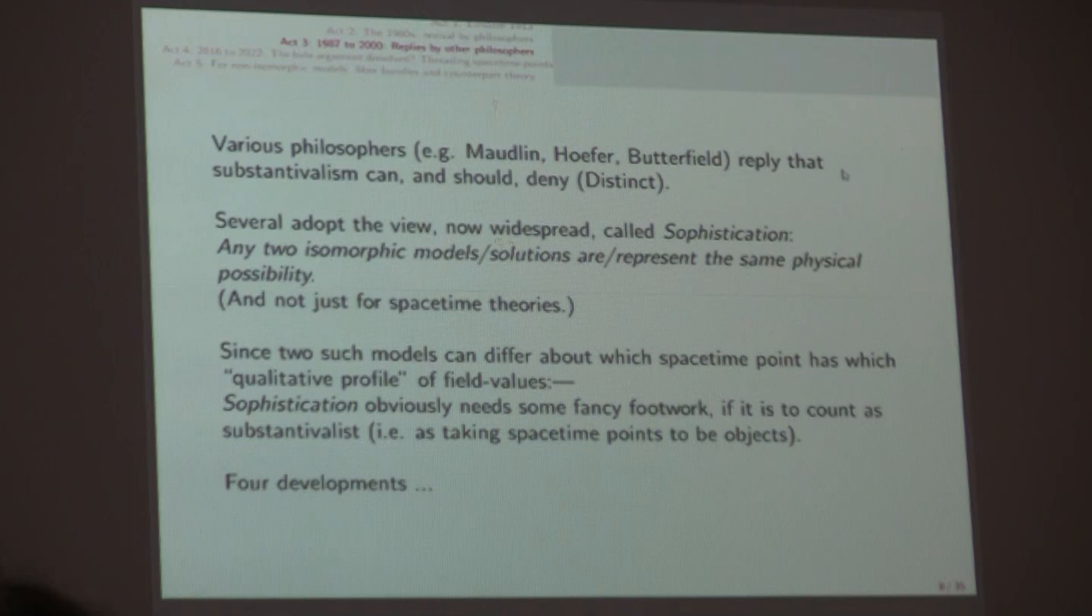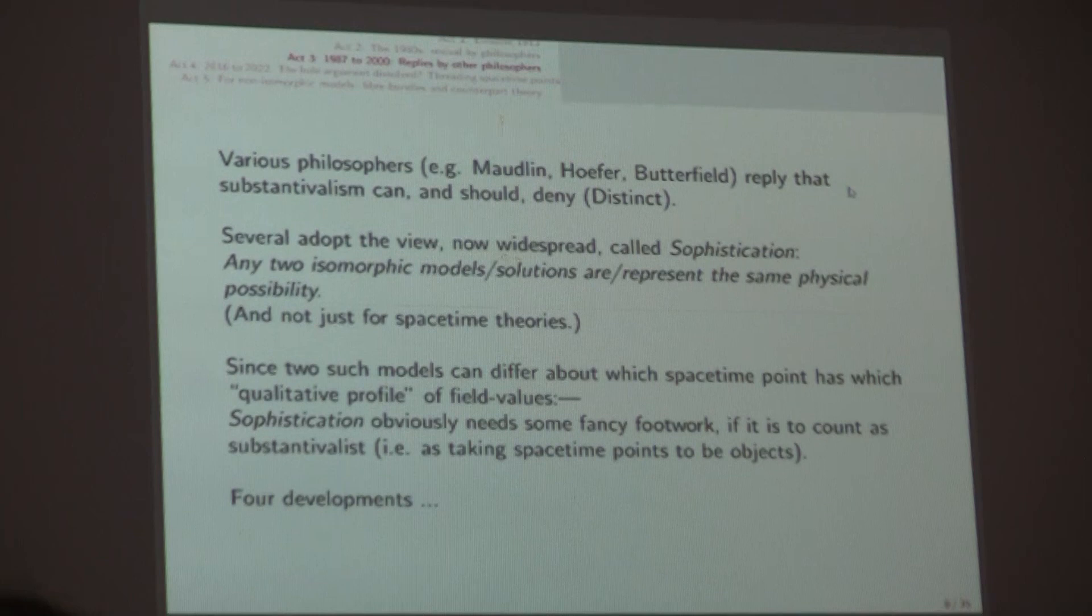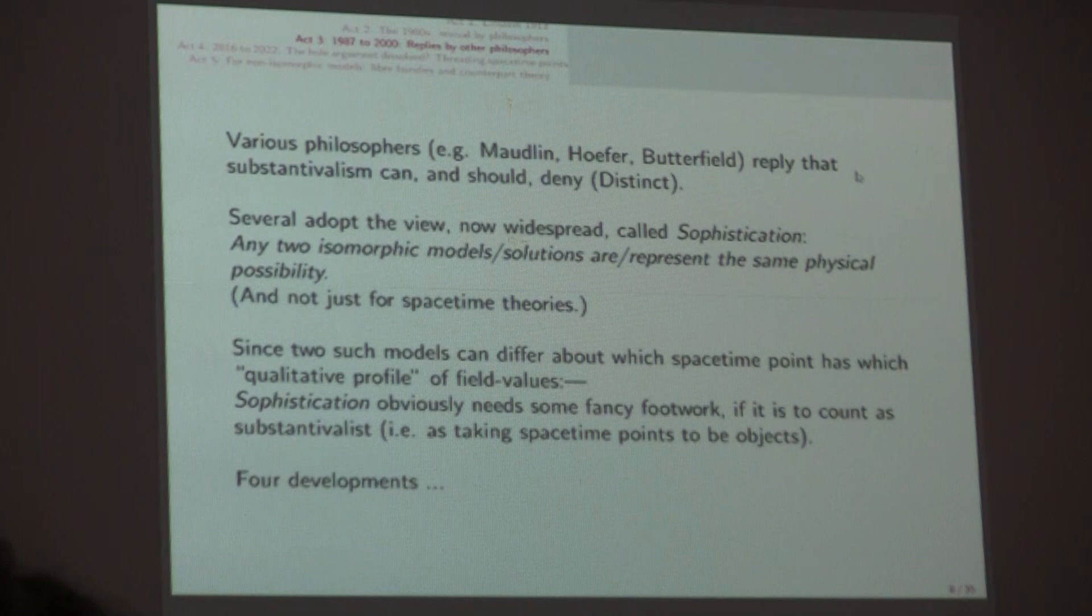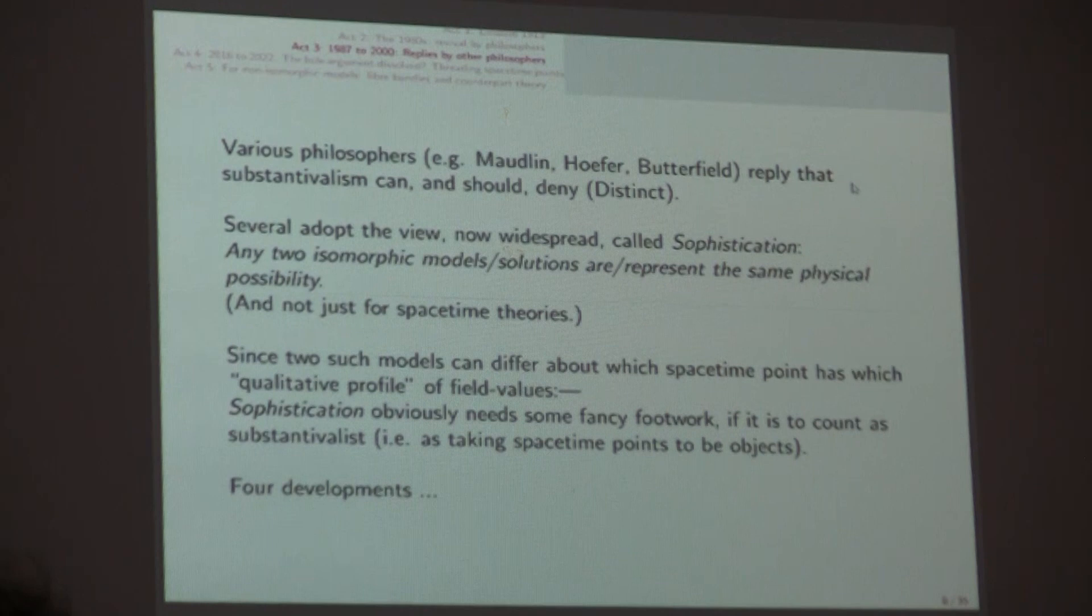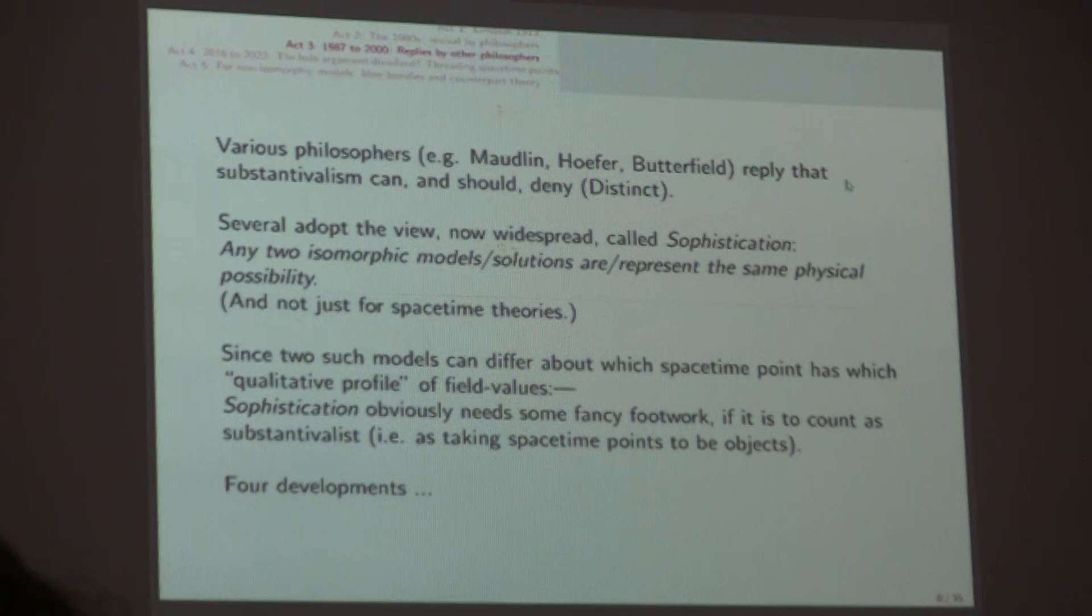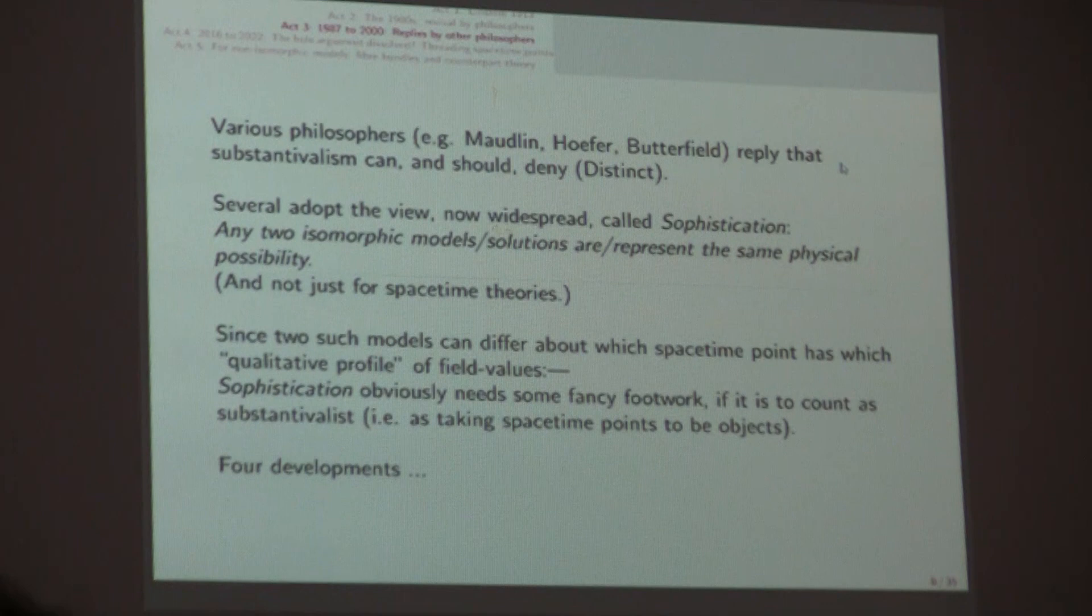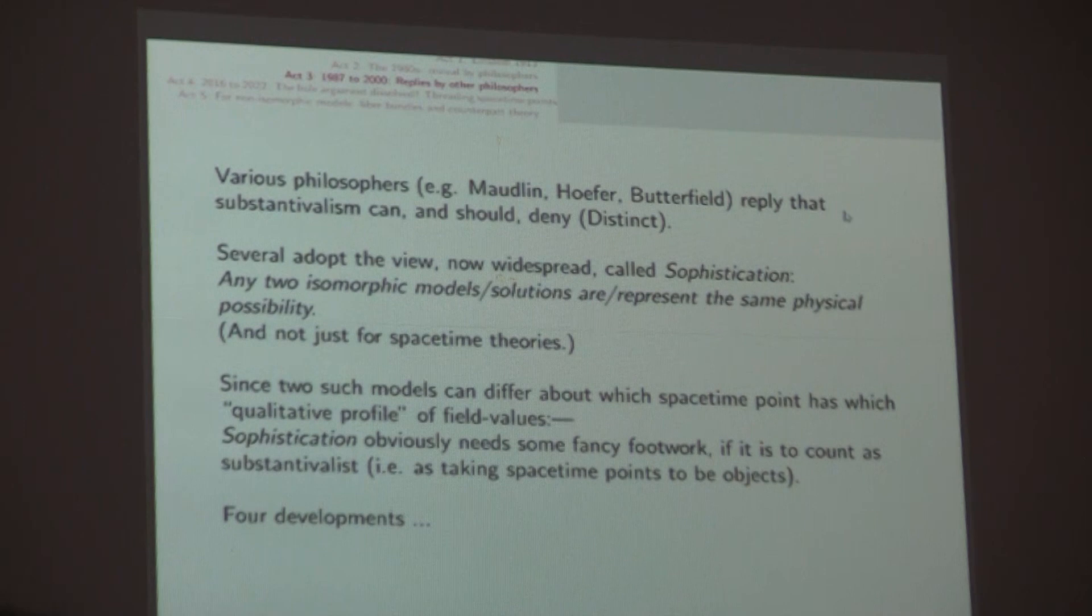Substantivalism can, and even should, deny the assumption distinct. And nowadays, several adopt the view called sophistication where you say any two isomorphic models are in fact representing the same physical possibility. Now, I've just said that two such models in the GR case differ about which spacetime point has which qualitative profile of values of fields. So it is going to take fancy footwork by sophistication if it is to count as substantivalist.